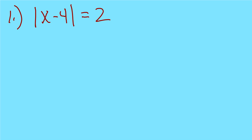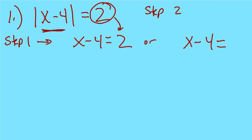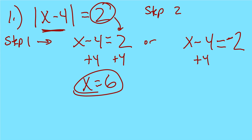Number 1: you have the absolute value of x minus 4 equal to 2. Step 1 says you write x minus 4 inside the bars twice. Step 2: the first one equals 2, the second equals negative 2. Step 3, using PEMDAS in reverse — add 4 to both sides — I get x equals 6 for the first, and x equals positive 2 for the second.